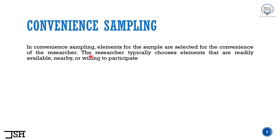In convenience sampling, elements for the sample are selected for the convenience of the researcher. The researcher typically chooses elements that are readily available, nearby, or willing to participate. So convenience sampling is that type of sampling method where the researcher looks at their own convenience first, and based on that convenience, they select people or things that are easy for them to select.